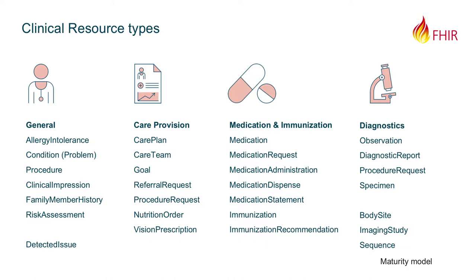FHIR is an evolving standard — it's not fully baked. Currently it's at Release 3, and we're expecting Release 4 at the end of this year. When you use a particular resource, be aware that details can change with new versions. The good thing is resources can be adapted and improved. We think of FHIR resources in a maturity model, similar to the CMM maturity model. Each resource has a maturity level — a number; the higher the number, the more mature it is. Eventually it becomes 'normative' and will always be backwards compatible.